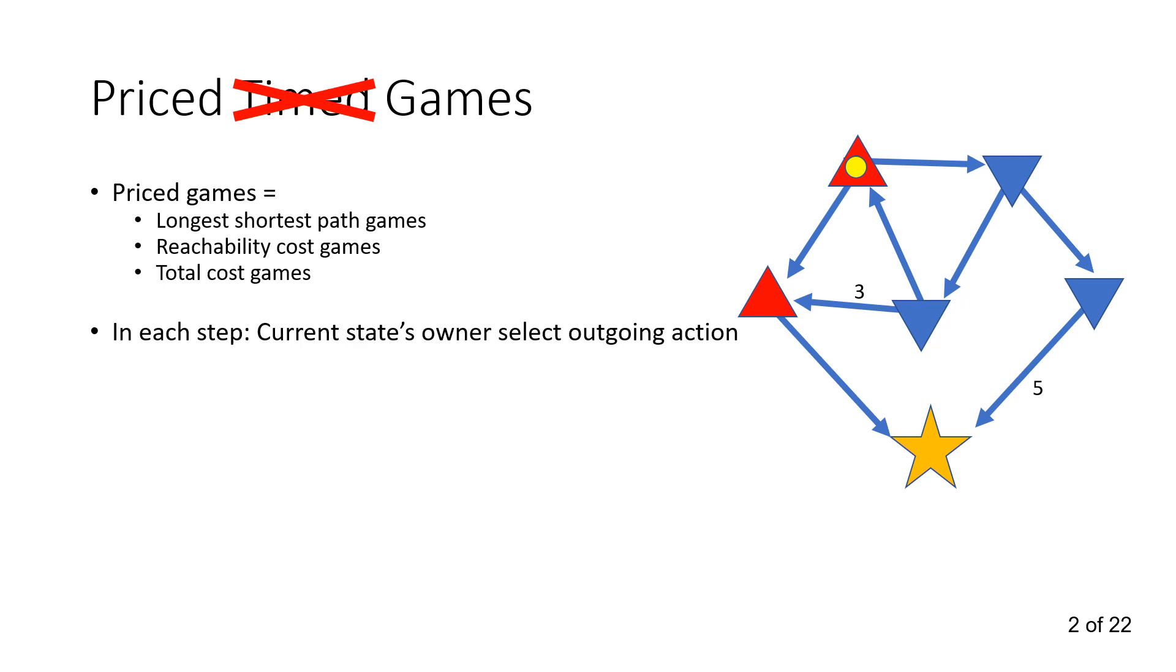So we start somewhere and we try to generate a path. The way we do it is, each step the current state's owner selects an outgoing action. And the outcome is the sum of the costs before reaching the star. So we start at outcome 0, the maximizer gets to choose, so he can either move left, but in that case he will get to goal for 0, or he can move right, maybe getting something more expensive. So he moves right. Minimizer can either move left, in that case he might get to goal for some cost, he can move right, he gets to goal for 5. He moves left because it seems better.